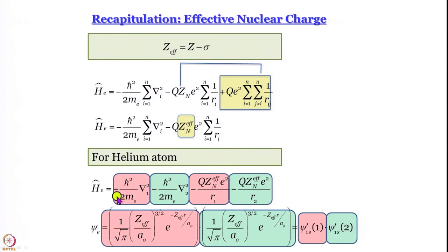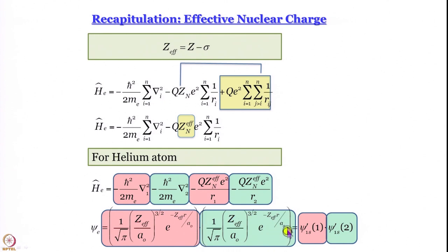That is how we write these one-electron wave functions — by replacing the actual nuclear charge with the effective nuclear charge. For the helium atom, for example, the Hamiltonian is a sum of 4 terms. The wave function is also a product of two wave functions — one in electron 1, one in electron 2. Within the orbital approximation, these are essentially atomic orbitals; for helium these are 1s orbitals. The only change from hydrogen is that you write Z-effective instead of actual Z.